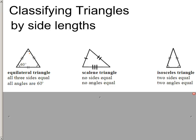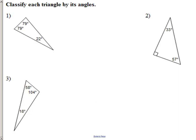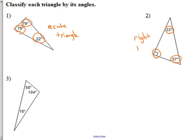It just takes a little bit of practice. Let's classify a few triangles by their angles, then by their sides. First triangle: all three angles are acute, so we call it an acute triangle. Second triangle: 33 degrees — that's acute; 57 degrees — that's acute; but 90 degrees exactly — that's a right angle, so it's a right triangle. Third triangle: two angles are acute, but one is obtuse, so it's an obtuse triangle.